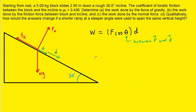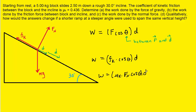Moving on to part B, we calculate the work done by the friction force using the same equation. For the force of friction, labeled Fk, we need to remember that Fk can be broken down further. The kinetic frictional force Fk equals the coefficient of kinetic friction multiplied by the normal force magnitude. The challenge is to find the value of the normal force magnitude. To do that, we take the gravitational force and break it into its y and x components, where the y-axis is superimposed on the diagram and the x-axis runs parallel to the surface of the ramp.